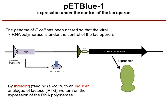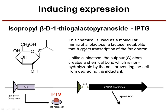When working with this promoter, we use an inducer which is an analogue of lactose called IPTG. IPTG binds to the LAC repressor and causes it to drop off the LAC operator. IPTG is an inducer that is structurally similar to lactose, but a sulphur atom creates a chemical bond which is non-hydrolysable by the cell, and so causes the LAC repressor to drop off permanently.